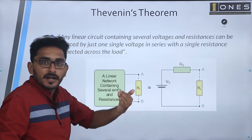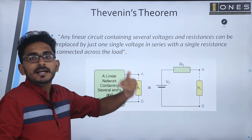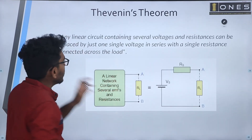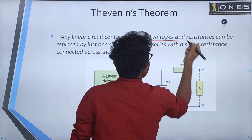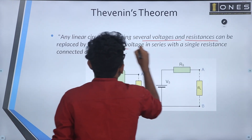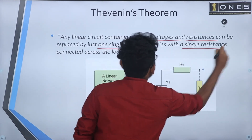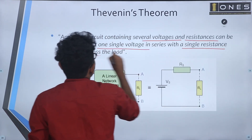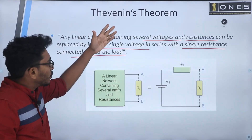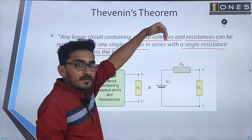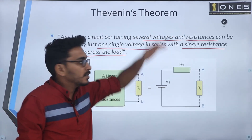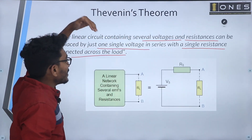We are going to be talking about the linear active bilateral circuit. A linear active bilateral circuit containing several voltages and resistance can be replaced by just one single voltage in series with a single resistance connected across the load. The circuit can also contain current sources as well.